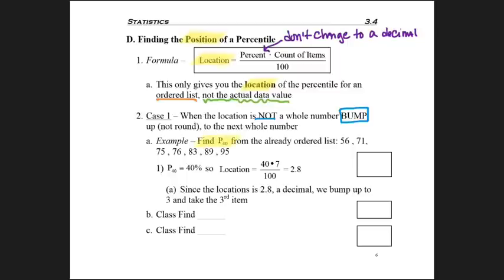So imagine this problem. We're asked to find P40 from an already ordered list, which is good for us. Otherwise, we would have had to order it. So imagine these are a bunch of test scores, and we want to know where is the 40th percentile. Like any student who got 40% or less of that group, not a score, but 40% of the bottom 40% of this group.